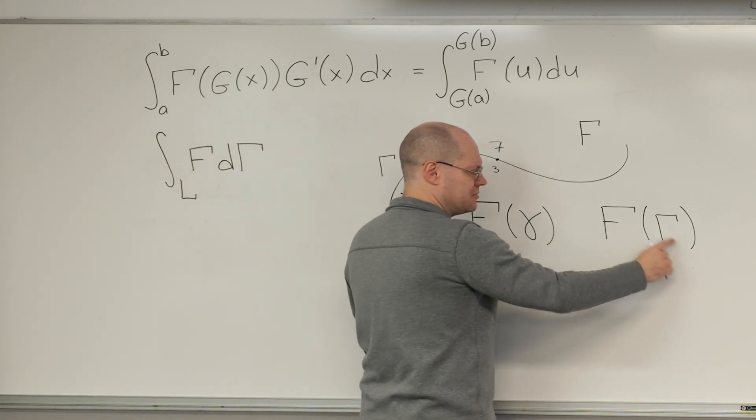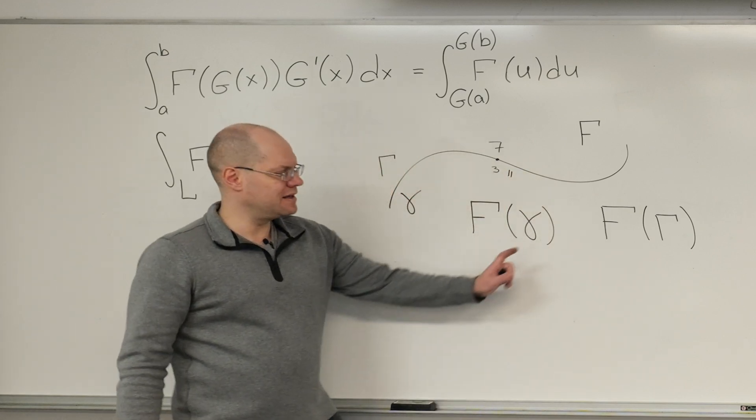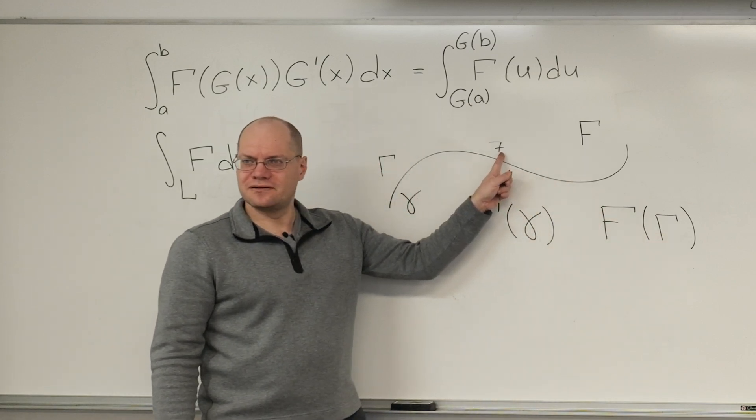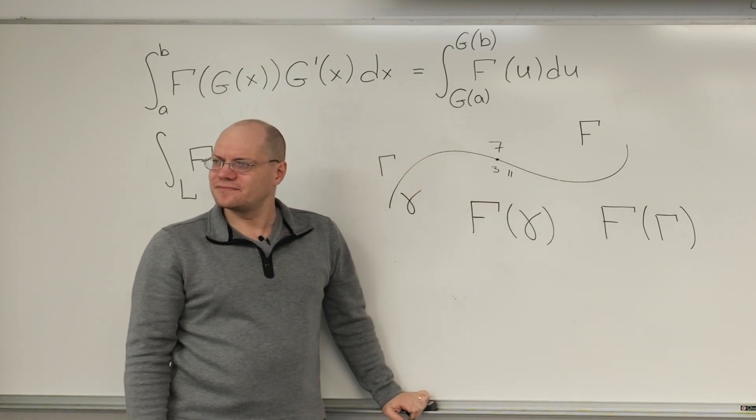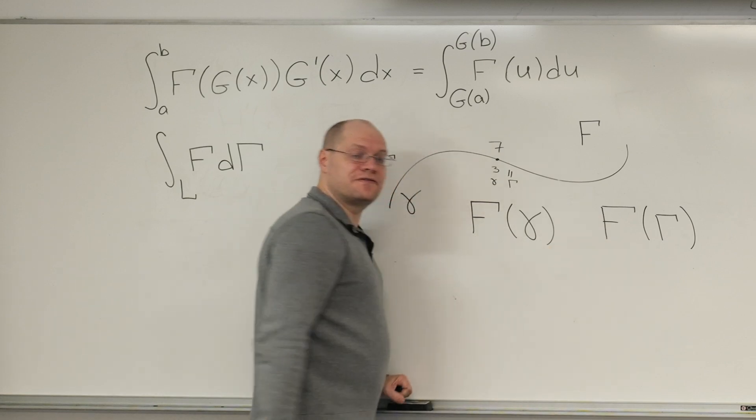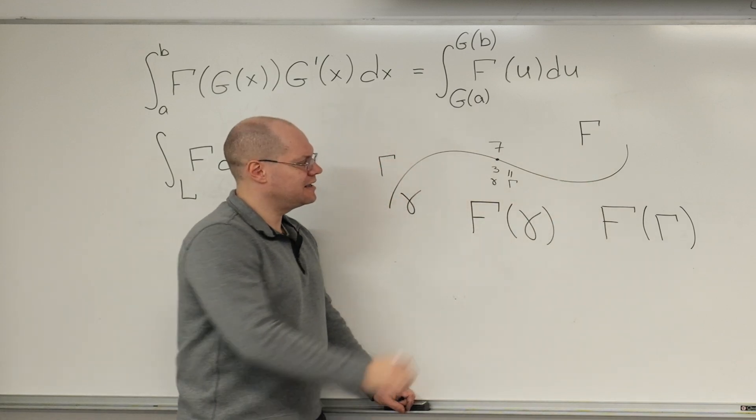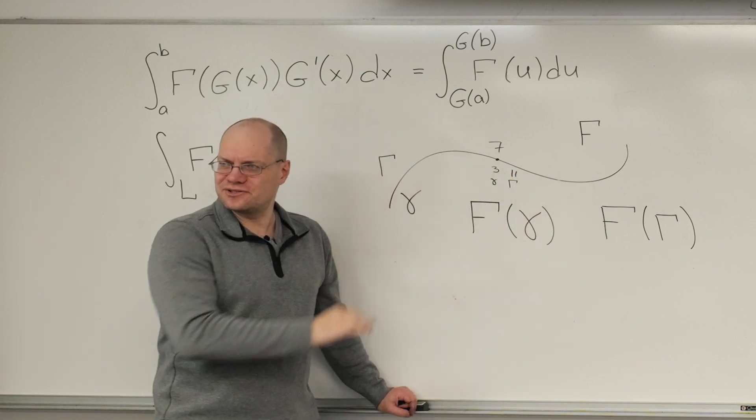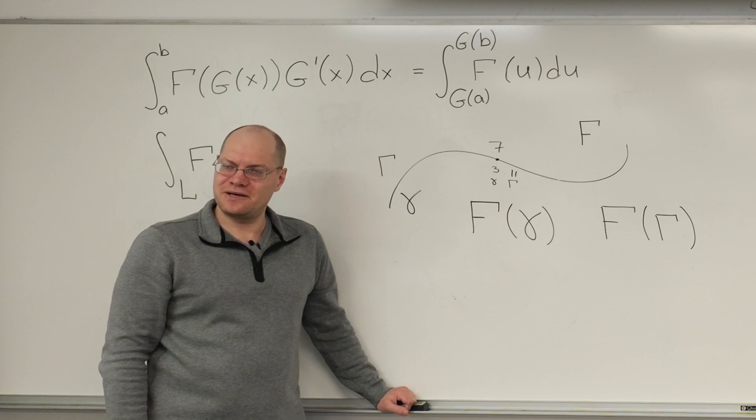And suppose that the value of the parameter capital Gamma was, for example, 11. Then this F at 11 also equals 7. Because they both represent this field, which has nothing to do with any parameter. Does that make sense? So these two Fs are different functions. And they're different from this field F, but they're all related. And they're all related in the way that you're - oh, this was an 11 - in the way that you're seeing on the board, and it makes sense. Does it? You guys agree with me that that relationship makes sense?